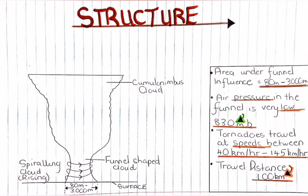Now we're going to move on to the structure of a tornado. That's a very simplified diagram of what a tornado would look like. Starting from the top, we've got the large cumulonimbus cloud which is then connected to a funnel-shaped cloud. This funnel-shaped cloud extends to the surface and is in contact with the surface. The area that's under the influence of the funnel is usually between 80 meters and 3,000 meters.